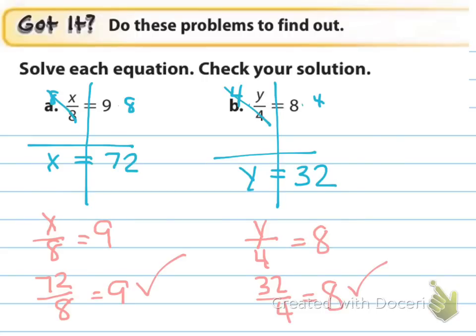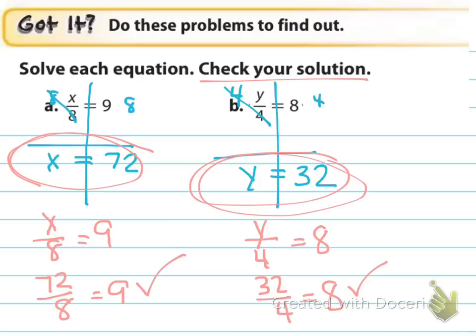All right, so the answer for A is 72, and for B is 32. And don't forget to check your work. It specifically says to do so in the directions. The answers you should be circling are these. Make sure you circle them, that way we know what the answers are. Sometimes we get mixed up and end up saying that 9 is our answer. Well, 9's not the answer. 9's the checked work. So just make sure you do that correctly.